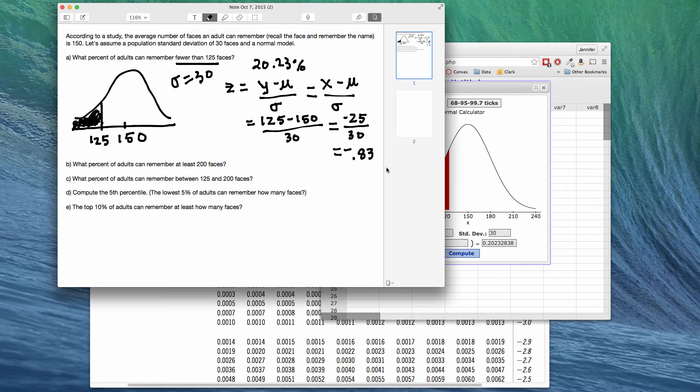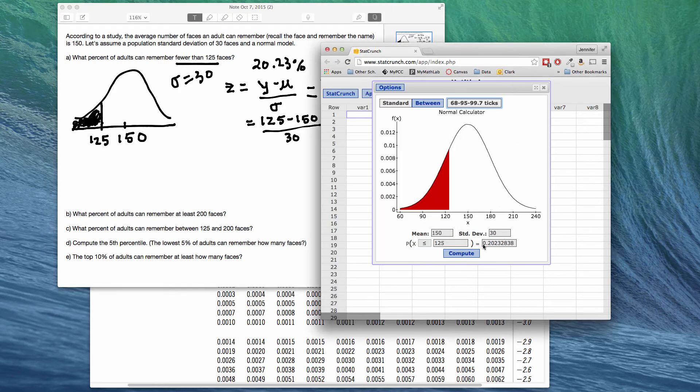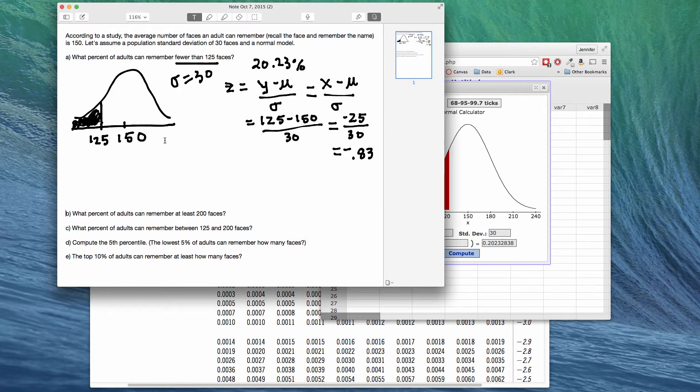We have a z-score of negative 0.83. Typically, z-scores go out to two decimal places, and that's because the normal tables only have two decimal places. So it's just kind of customary. If you're using the calculator like this, you can use as many decimal places as you like. So that whole point was to get a z-score, z equal to negative 0.83. The idea being that 125 is 0.83 standard deviations below, so minus, below the mean of 150.